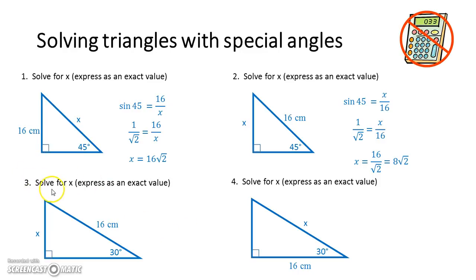Next up, we've also got opposite over hypotenuse sine 30, but 30 degrees this time. So sine 30, we just remembered was a half. So rearranging, really simple. x is eight.